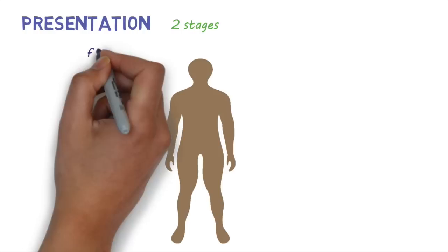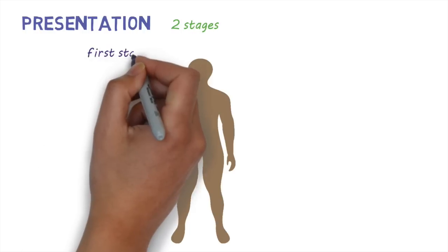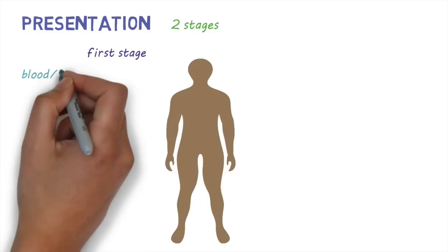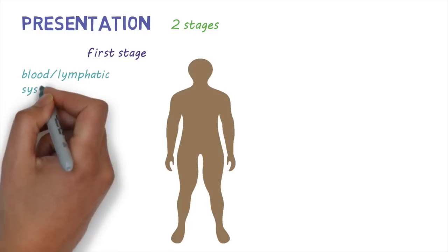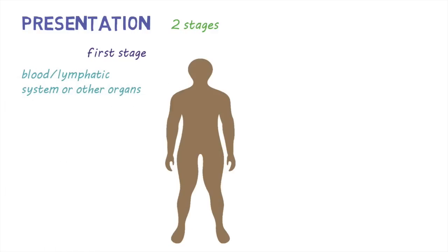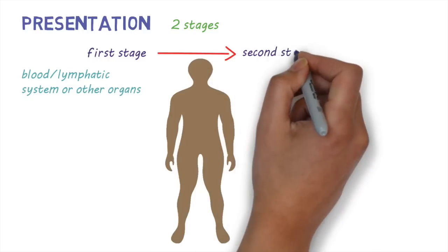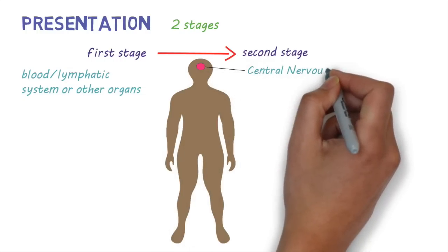Let's have a look at how the disease presents. There are two main stages of the disease. In the first or early stage, the parasite is found outside the central nervous system, mainly in the blood, lymphatic system, or other organs such as the heart, liver, spleen, or eye. In the second or late stage, the parasite invades the central nervous system.